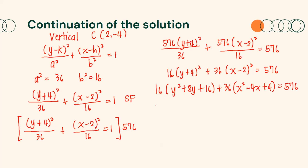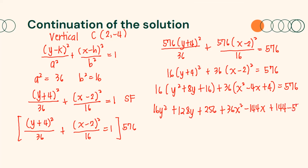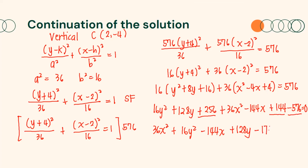Distributing 16 and 36, we get 16y² plus 128y plus 256 plus 36x² minus 144x plus 144 minus 576 equals 0. Rearranging the terms by writing the x² term first, we have 36x² plus 16y² minus 144x plus 128y, and simplifying the constants: 256 plus 144 minus 576 gives −176, so we get minus 176 equals 0.